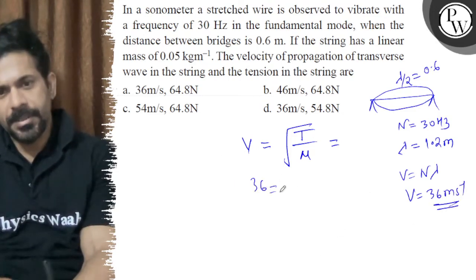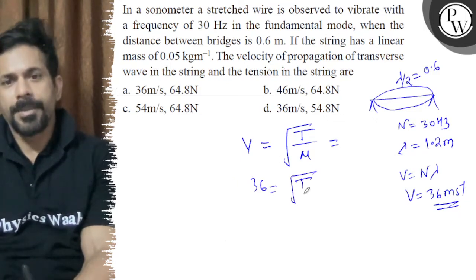36 meters per second. Tension is equal to v squared times mu. Mu is equal to 0.05.